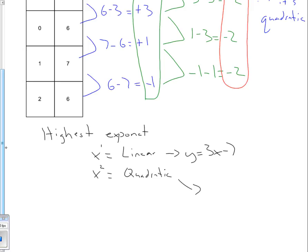The quadratic example would be y equals negative 2x squared plus 3. So where the highest exponent is a 2, it's quadratic. Where the highest exponent is a 1, it's linear. If it's neither one of those two things, then it's not a linear or a quadratic relationship.